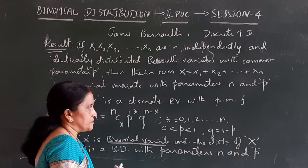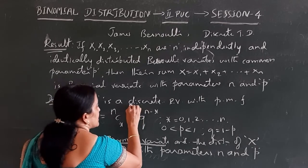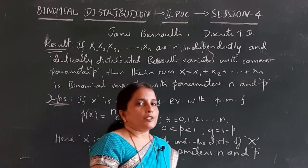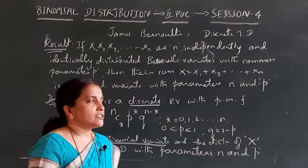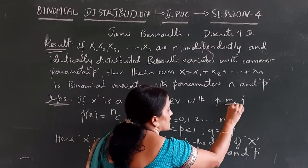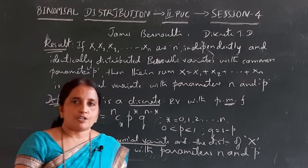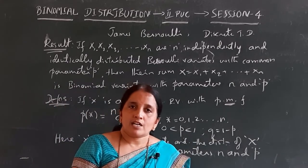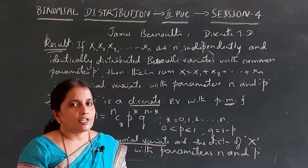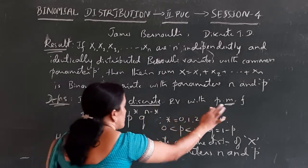While studying the definition, note two important points: we start with a discrete random variable because binomial is a discrete theoretical distribution, and the probability function is called a probability mass function because the probability function of a discrete random variable is called a probability mass function.